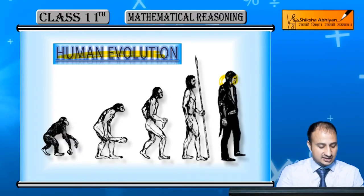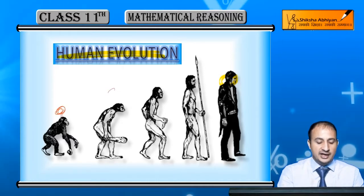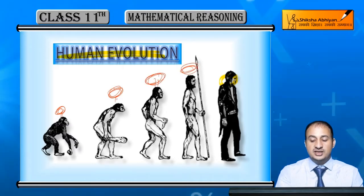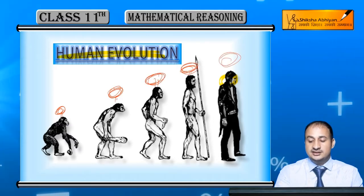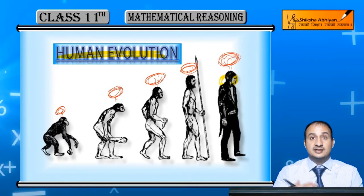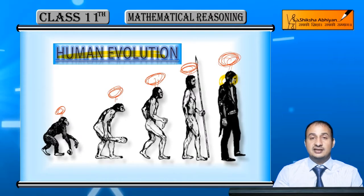Aur inhi ke saath saath student hamara yahan pe kya ho gaya - mind ki jo growth thi, mind ki growth bhi badhti ja rahi hai. To homo sapiens ab hamari species hai, iska mind bhi kya ho raha hai - student badhta ja raha hai, aur ye better reason karta ja raha hai. To ye reasoning bhi hamare evolution ke saath saath, ye ability, hamara mind jo hai, iski ability badhti gayi.